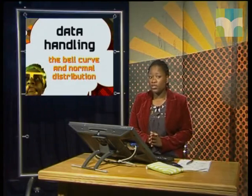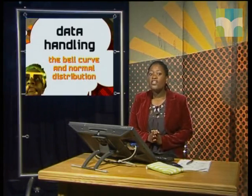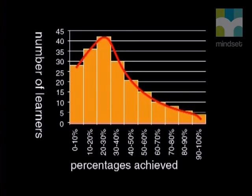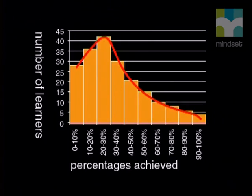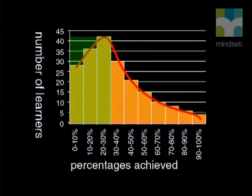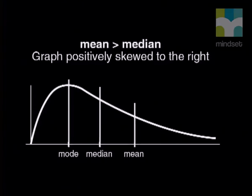There are times when graphs resemble the normal distribution but are not symmetrical — they look like they've been pushed over. This shape is said to be skew. For example, if the test for the whole grade was very hard, many students would get lower marks. The mode would be at 20 to 30%, but the median is not easy to identify. The bars on the left of the high peak are higher than on the right, meaning there are a lot of values on the left, causing the median to be in the left region. The mean also lands in the left region but closer to the middle. We say that if the mean is larger than the median, the graph is positively skewed to the right.